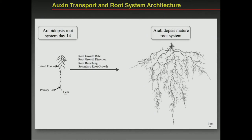Thinking about the processes important for making a deep root system from an early seedling, there's a limited number. One is root growth rate — if the primary root grows a lot, the whole root system might become deeper. Then there's the direction of roots — some lateral roots grow more to the side, offset from the gravity vector. That's very important: if all roots grew sidewards rather than downwards, you'd have a very different root system. Then there's root branching and secondary root growth.